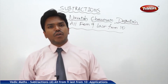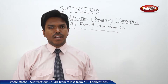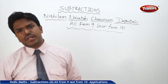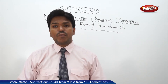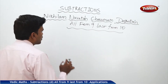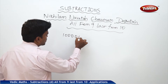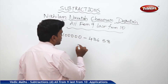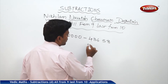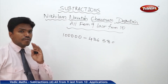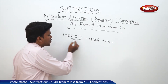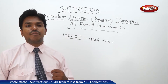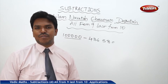Friends, in this session we are going to discuss the last concept — another application of Nikhilam Navatashcaramam Dashatah, that is 'all from 9, last from 10.' How can we use this concept in one more way? Whenever you are getting numbers like this — suppose I want to subtract 1 lakh minus 43658 — whenever the minuend is having a number of zeros like this, it is very easy to do this with the help of Nikhilam.